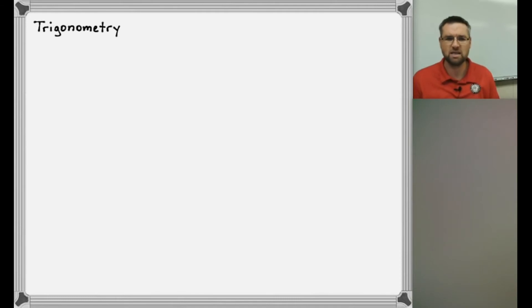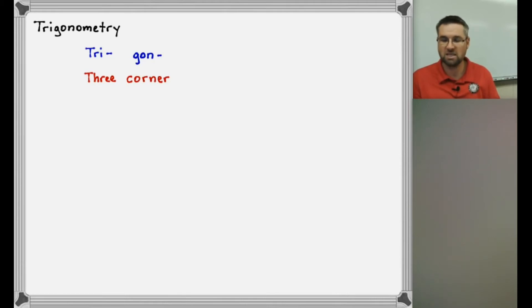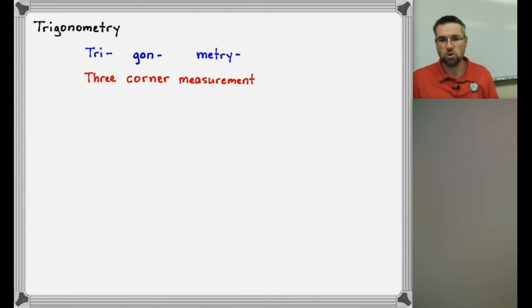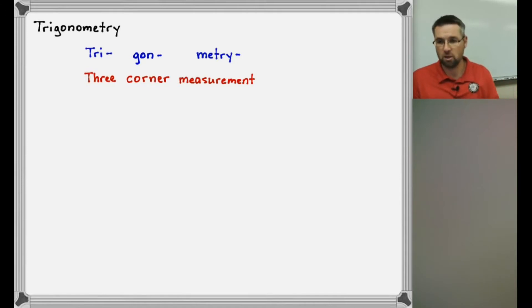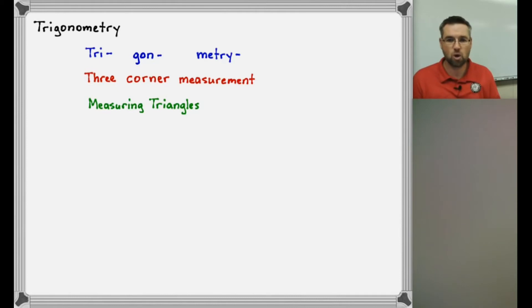So trigonometry — what is this fancy, crazy, nonsense-sounding word? If I break it down into three different pieces: "tri" means three; "gon" — like a polygon — means corner; and "metry" simply means measurements. So trigonometry is dealing with objects that have three corners and determining their measurements. That just means we're measuring triangles, and we've been doing that all along. So it's just a fancy word for finding missing sides and missing angles of triangles — three-sided or three-cornered things.